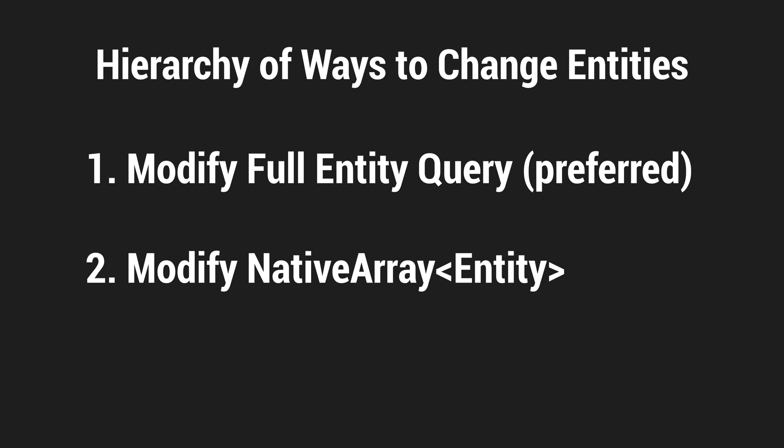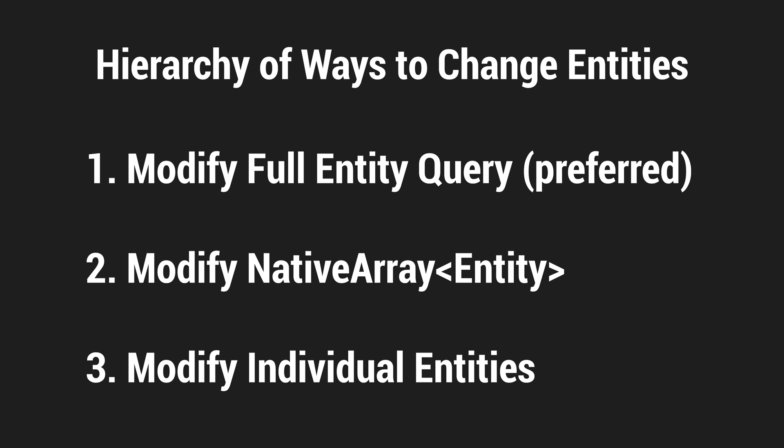If for some reason we can't make changes on a full entity query, the next best thing is to make changes on a native array of entities. This gives a little bit of extra performance because it knows the scope of how many entities and what entities it needs to update, so it can make some optimizations. But it's not going to be as performant as updating a full entity query. The thing you want to avoid at all costs is just modifying individual entities — it's something you should only do when necessary, because the computer is going to be going to different places in memory and can't make the same optimizations as with a native array or a full entity query.